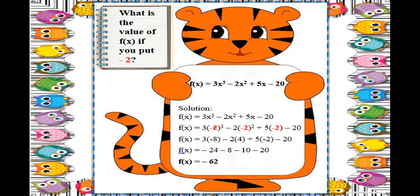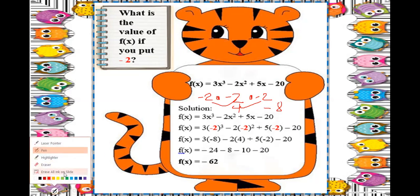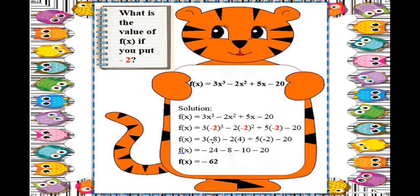Negative 2 raised to 3 means multiplying negative 2 by itself three times: negative 2 times negative 2 times negative 2. Negative 2 times negative 2 is positive 4. Positive 4 times negative 2 is negative 8 — different signs, so the result is negative.